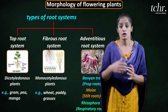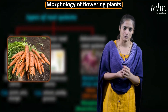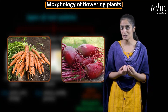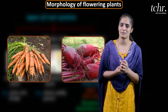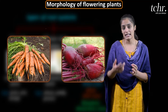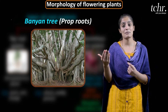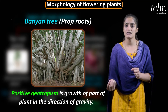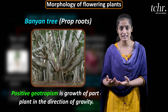Root modification: roots can be modified to become a storage organ. Examples include carrot and beetroot, which are roots used as storage organs by the plant, storing nutrients. For support, the prop root in the Banyan tree grows from aerial branches down towards the ground. It is positively geotropic and supports the entire structure of the tree while also absorbing nutrients.